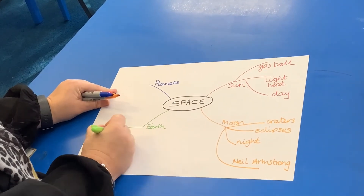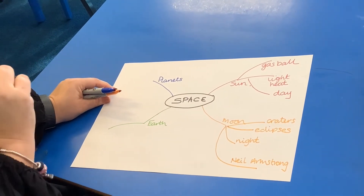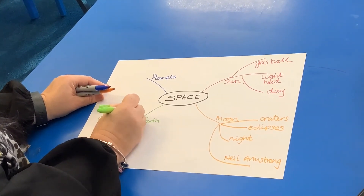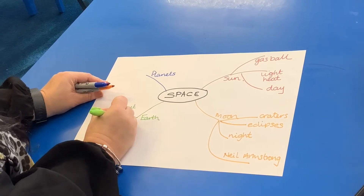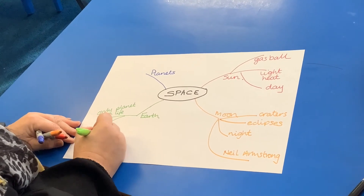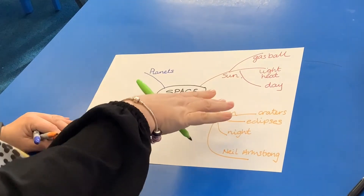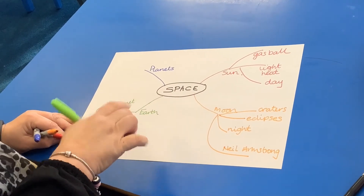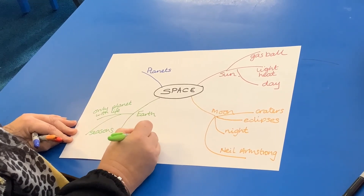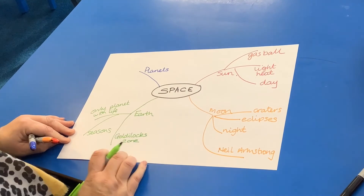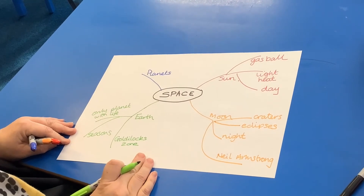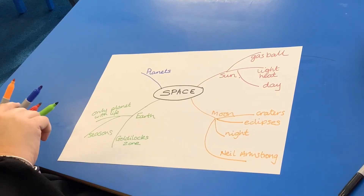Earth — hopefully we know a bit about Earth. We know it's the only planet in our solar system that we know has life. We know that we have seasons and that the weather changes on the Earth, which is probably to do with where it is in relation to the Sun. You might have heard of the Goldilocks zone — it's to do with the Earth being just right where it is from everything else for life to happen.